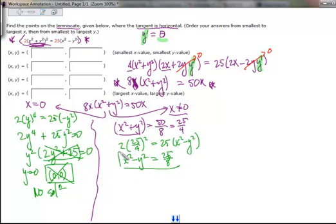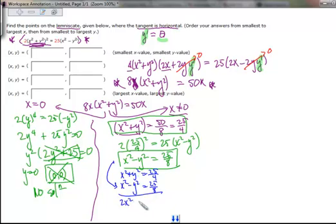We have this equation and this equation, a couple of equations and a couple of unknowns. x² + y² = 25/4 and x² - y² = 25/8. If we add these two together, we get 2x², the y squareds are gone, equals 75/8. Divide that through, we're going to get x² = 75/16. So x equals positive or negative √75 over 4 after taking the square root.